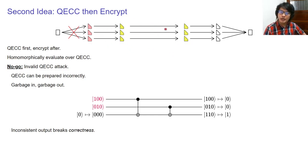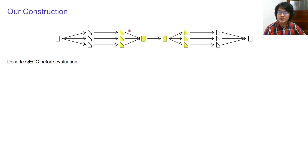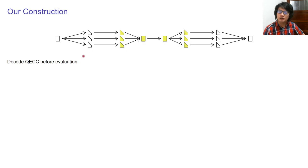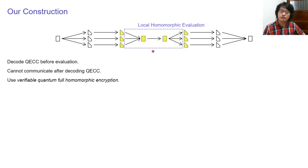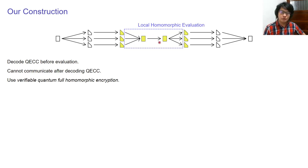We can fix this attack and get a working construction. The key difference is decoding the QECC before evaluating the circuit — combining the packets before circuit evaluation. This fixes the invalid QECC attack because even if the QECC was invalid, we handle it at the decoding step and always end up evaluating over valid inputs. The caveat is that after decoding QECC the data is no longer in packet form, so we cannot send further messages. This sounds like a job for verifiable quantum FHE, and that is exactly what we ended up using.